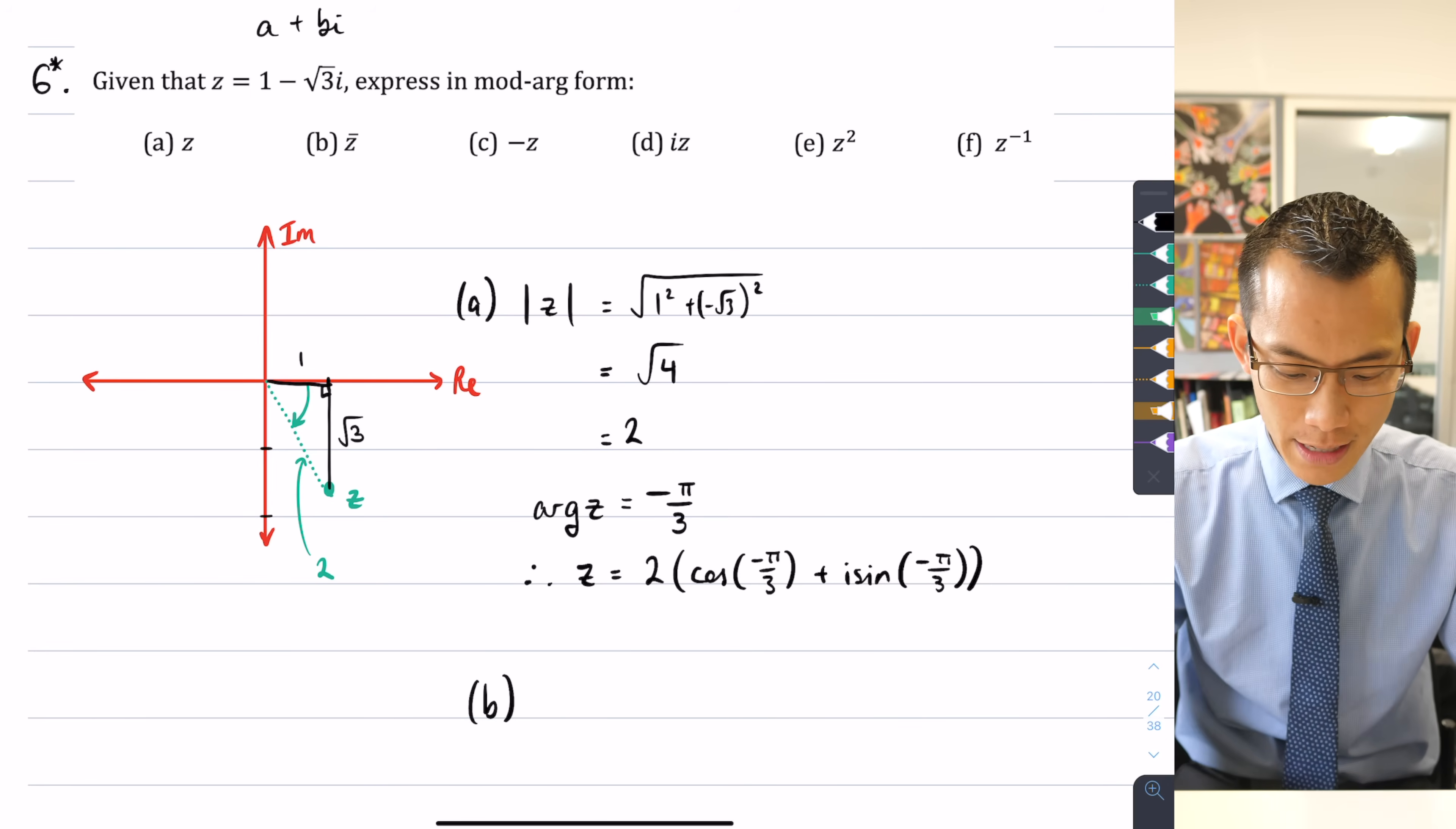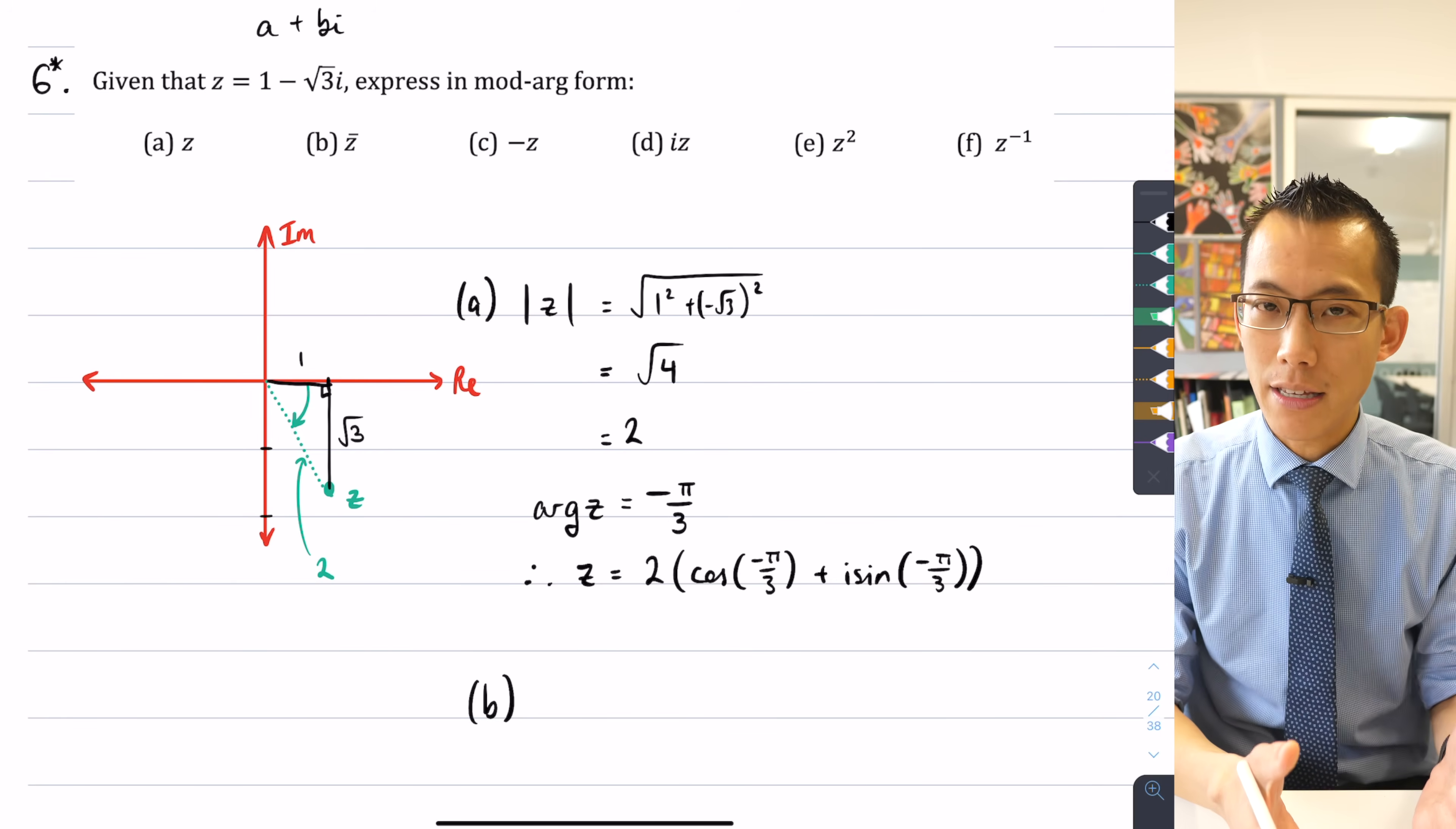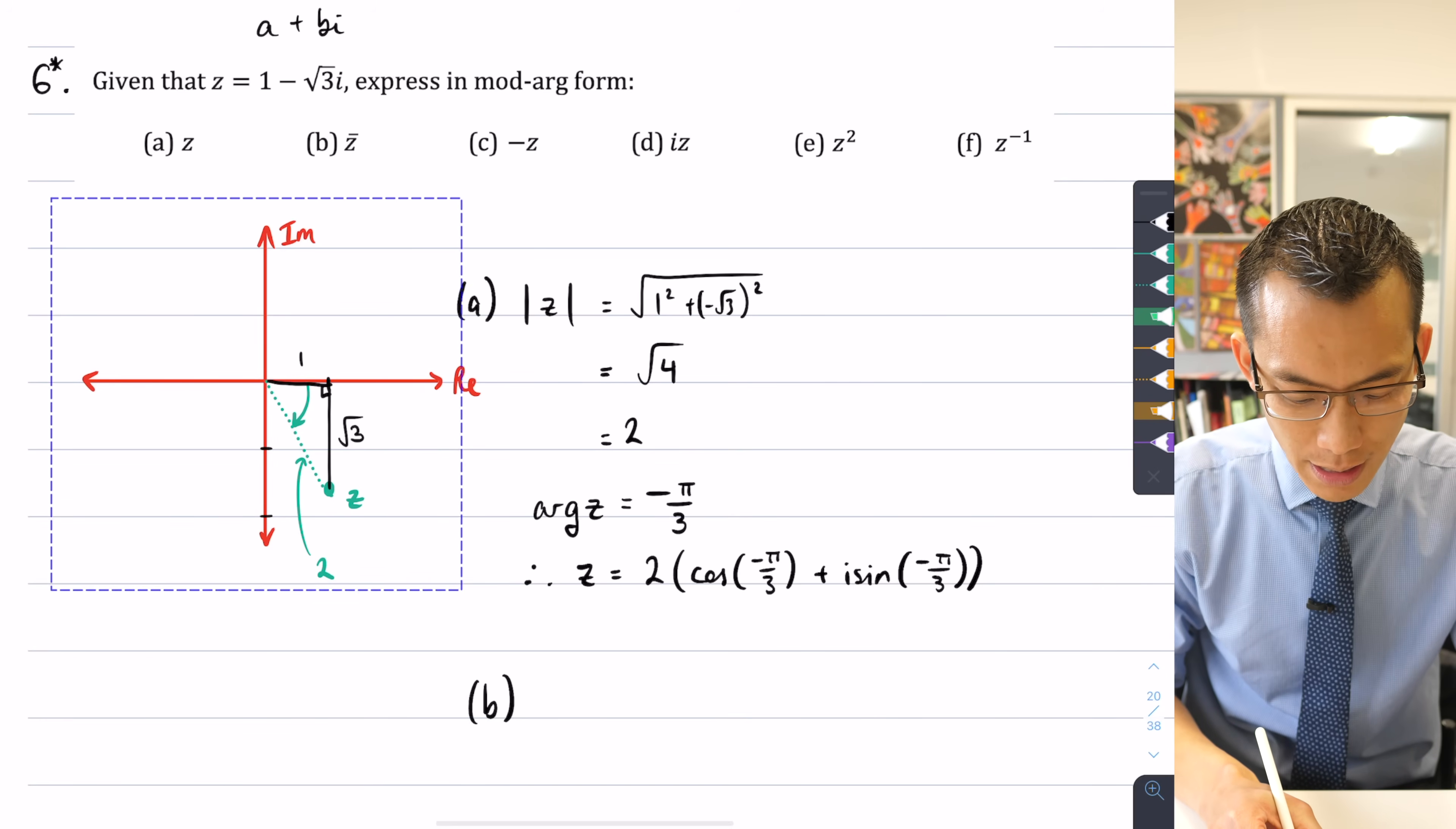I think that the visual setup that we had putting these things onto the complex plane is really going to help us, right? So what I'm going to do is I'm only going to copy this because it's going to get real busy real fast when I start to put b, c, d, e, and f on the same diagram.